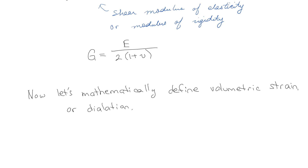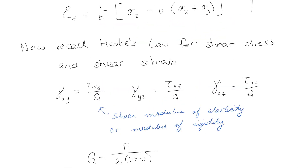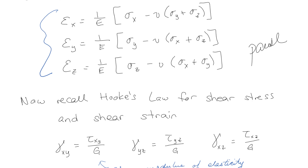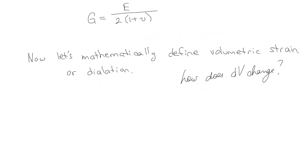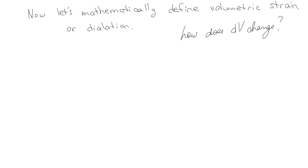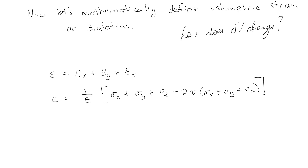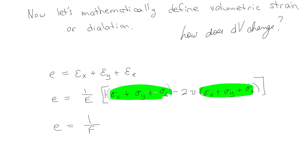Now, how do we define volumetric strain or dilation — how does dV change? What we're going to do is take all of the strain equations we had and add them all together. What you end up with is that dilation equals 1 over E times (1 minus 2 nu), times the quantity in parentheses. Sometimes people write it slightly differently, with the sum sigma x plus sigma y plus sigma z.